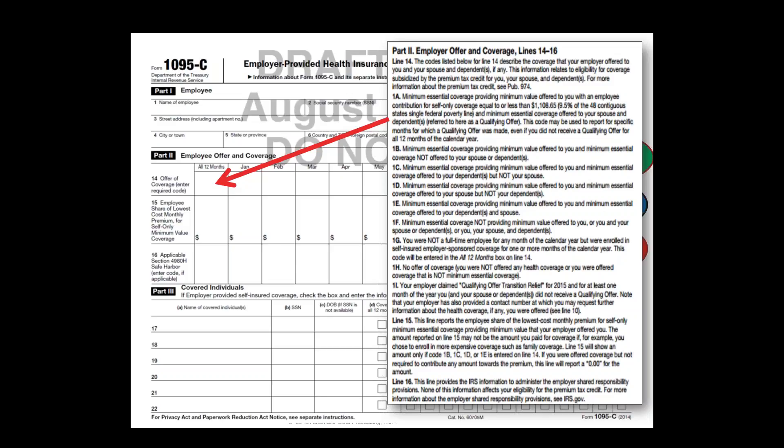Box 15 is the employee share of the lowest cost monthly premium for self-only minimum value coverage — what the employee cost was. This is used to track your shared responsibility obligations. The employee-only coverage cost relates to the pay-or-play mandate in 2015, ensuring they did not pay more than 9.56% of their employee-only coverage. These are month-to-month tracking mechanisms, so if people come on mid-year, leave mid-year, or go from part-time to full-time, it can be challenging, particularly without a good tracking system.